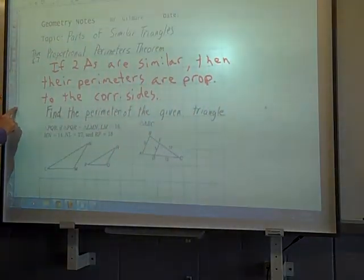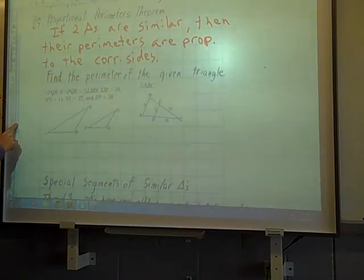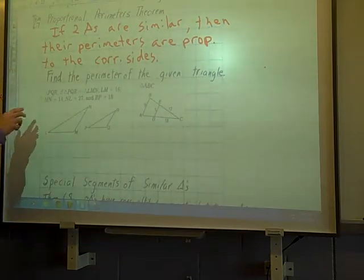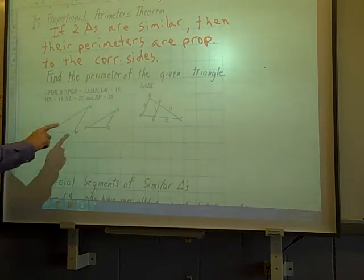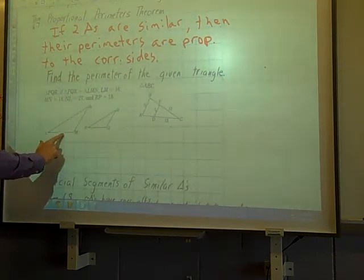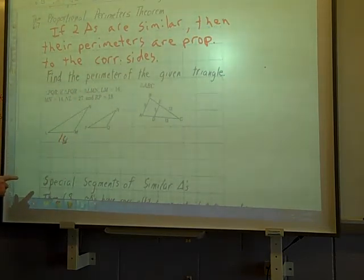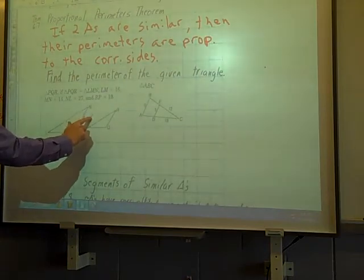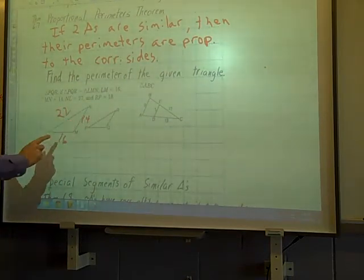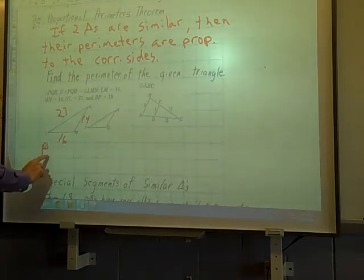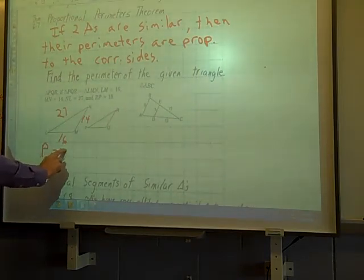So the perimeters can be used just like the other things. Let's look at an example. If two triangles are similar, then their perimeters are proportional to the corresponding sides. So triangle PQR is similar to triangle LMN. MN is 14 and NL is 27. 16 and 14 is 30, 30 and 27, the perimeter of this one is 57.